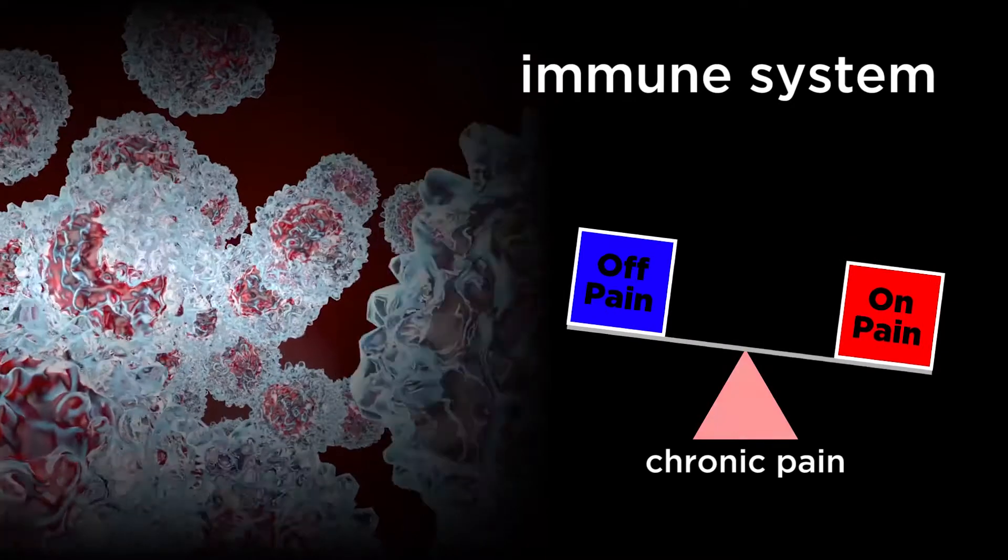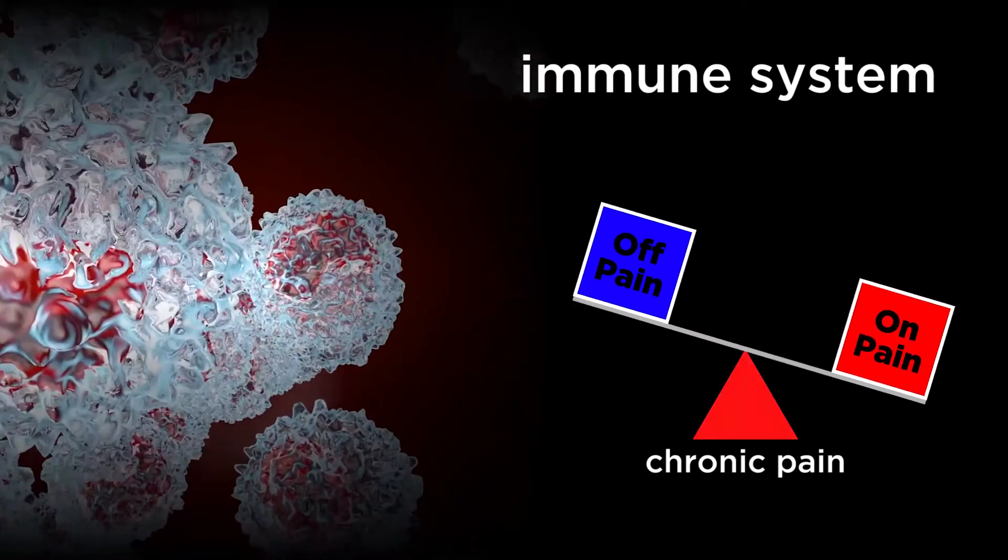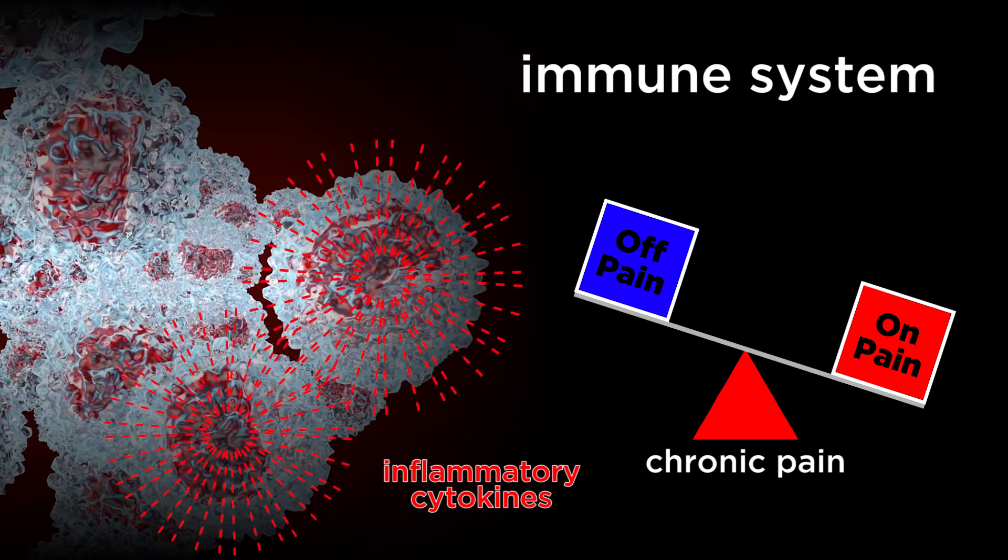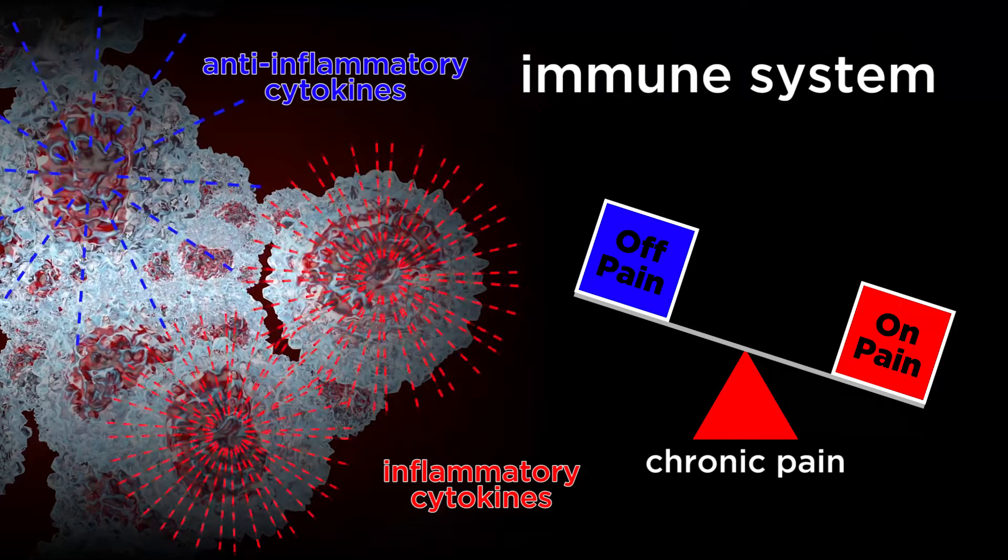In chronic pain conditions, this balance is shifted so that there are now more chemicals produced by the immune system that turn on pain, called inflammatory cytokines, and less chemicals that turn off pain, called anti-inflammatory cytokines.